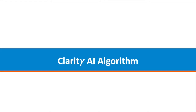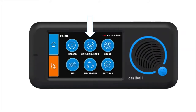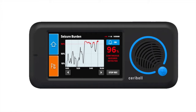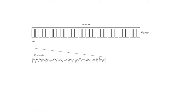The third functionality of the device allowing risk stratification is the Clarity AI algorithm. If you press the seizure burden button, you'll be asking the computer to quantify the amount of seizure or seizure-like activity in the last five minutes and plot it in a line graph and give you a percentile measure. This is the percentage of time in the last five minutes where epileptic activity was abundant. The five minutes of EEG will be divided into 10-second bins and the machine has been taught to identify patterns compatible with epileptiform activity. It will identify this for every single channel and electrode and quantify how much of the pattern exists in the last five minutes.